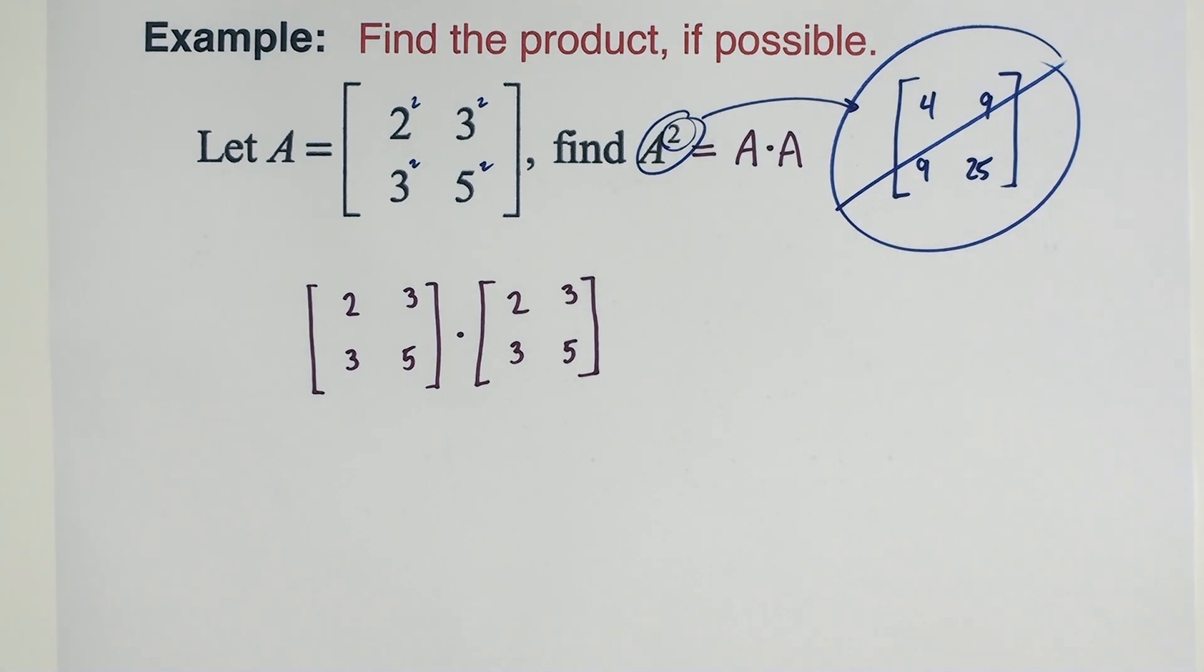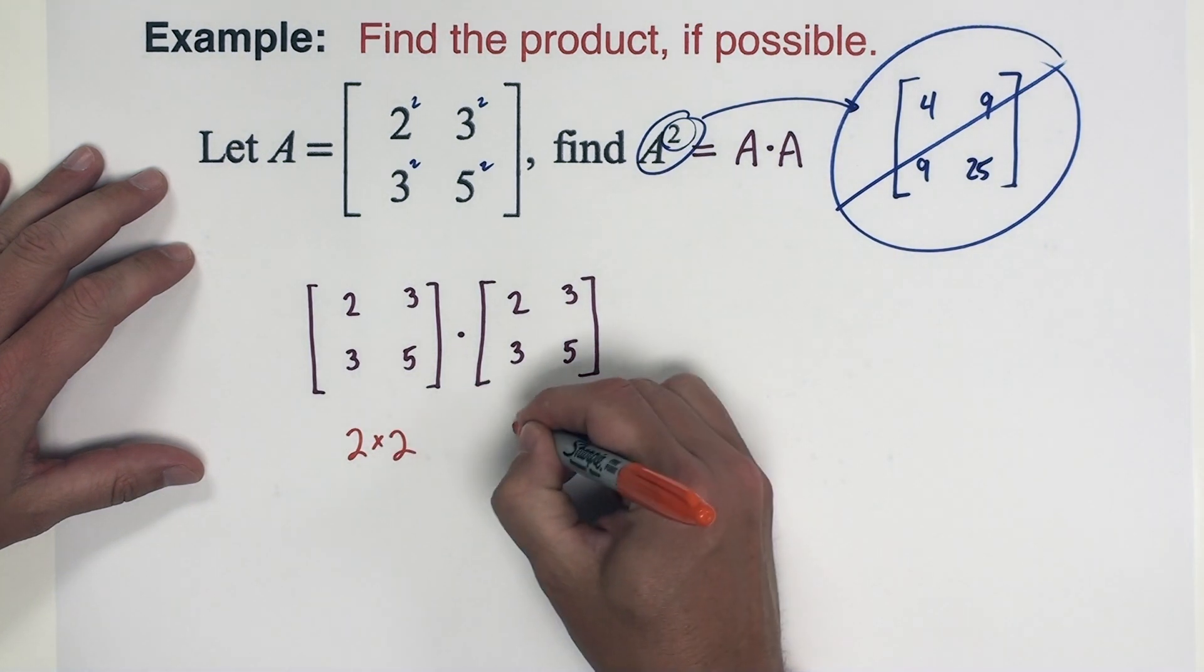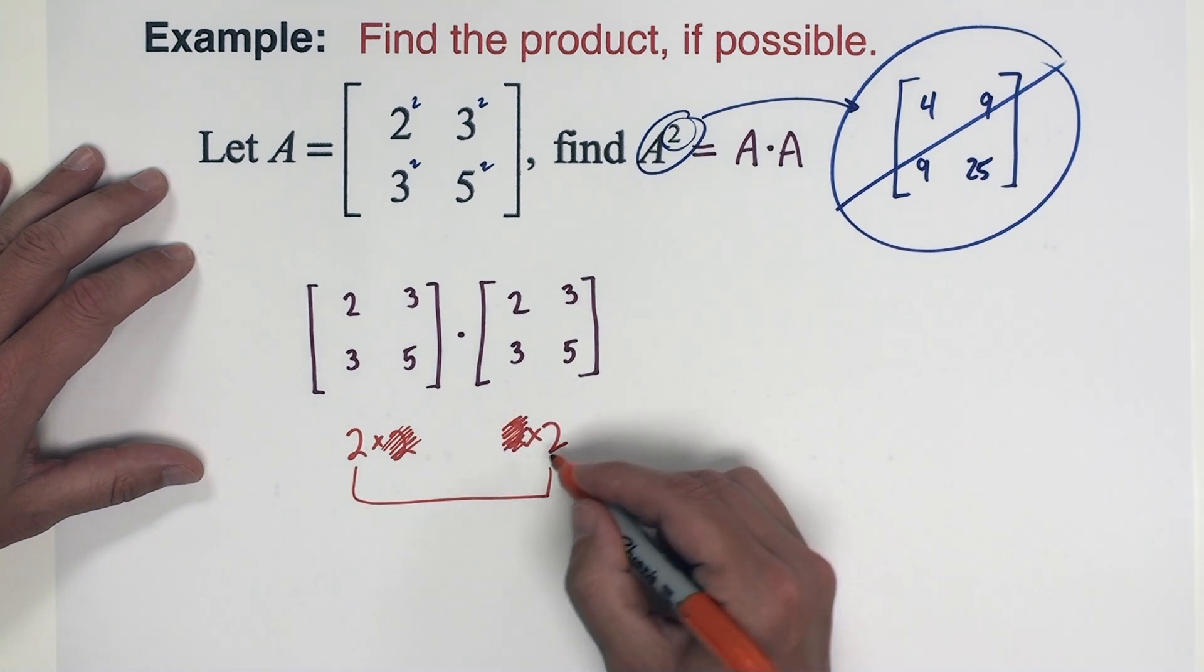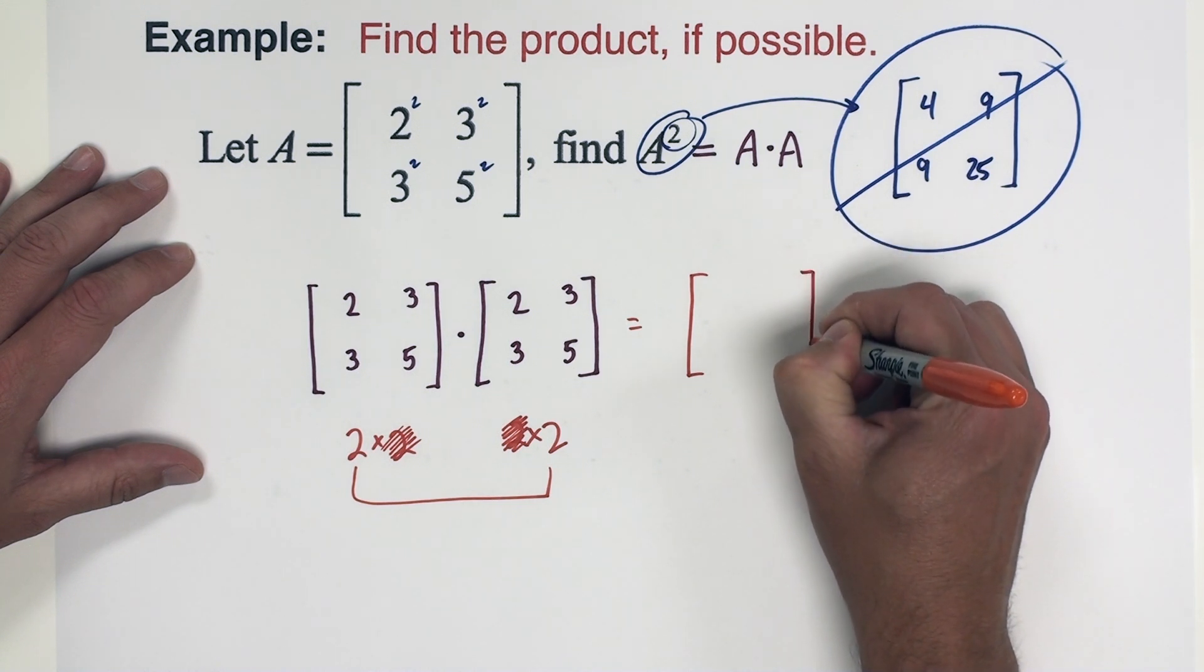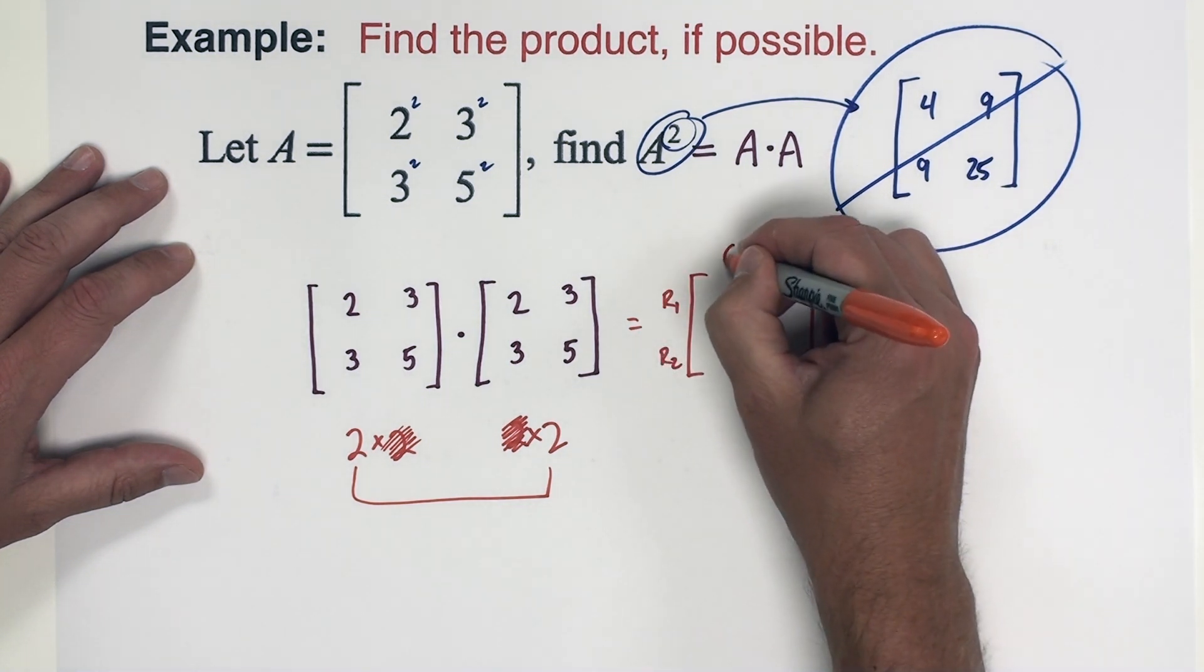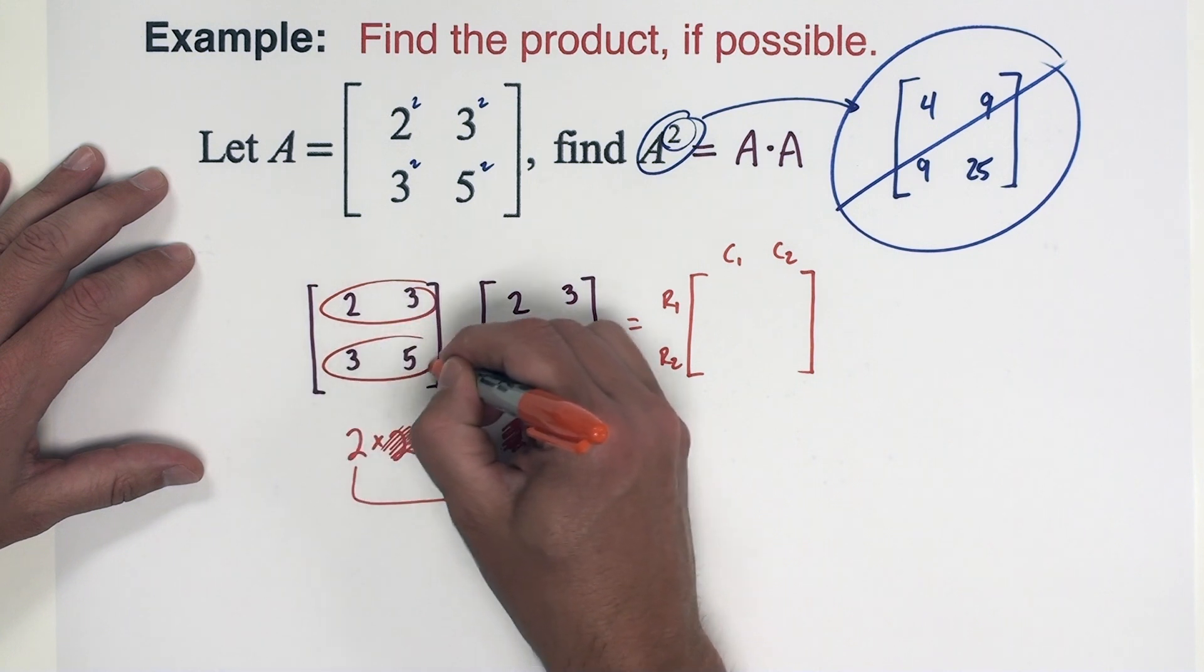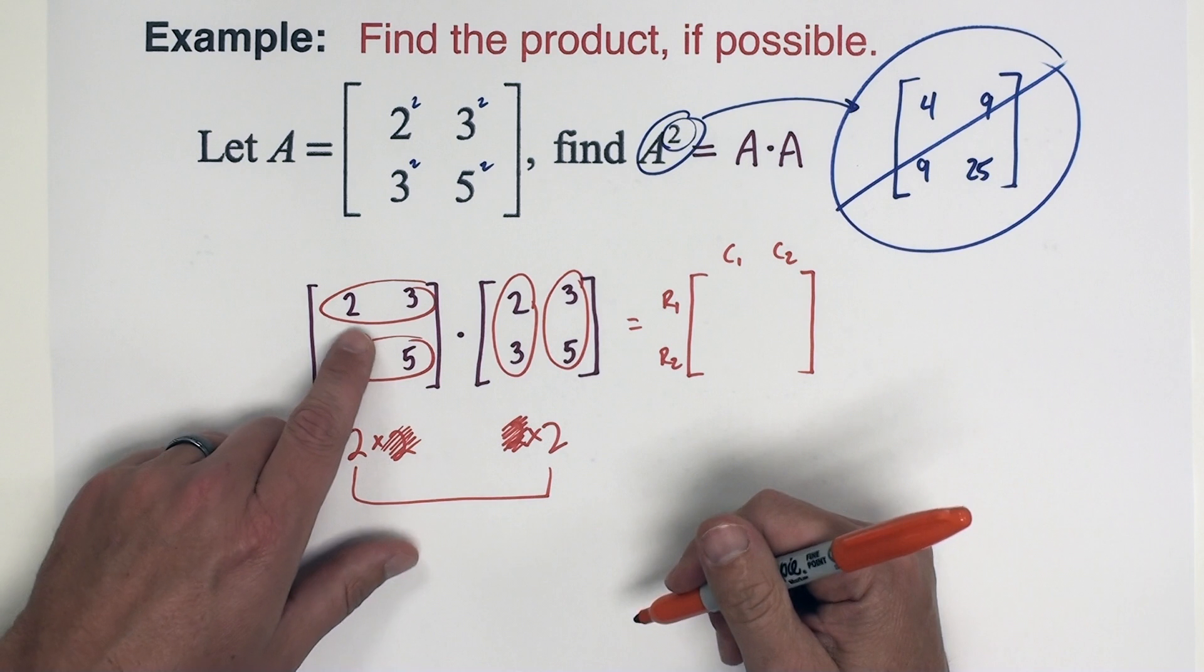So with matrix products, we are checking size. This is a two by two, this is a two by two. Those inside numbers match, so our answer is going to be two by two. So we want two rows and two columns. And over here, I'm just going to go ahead and circle them up to be faster. I'm going to use rows and columns.